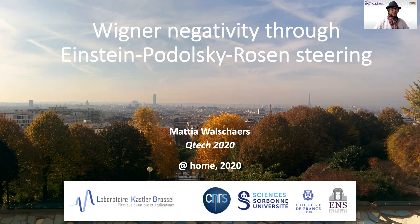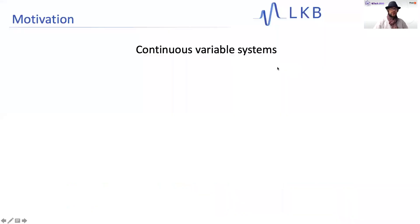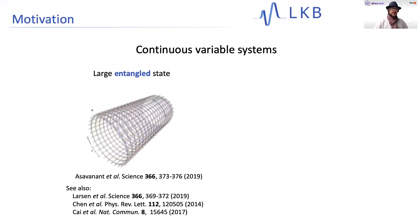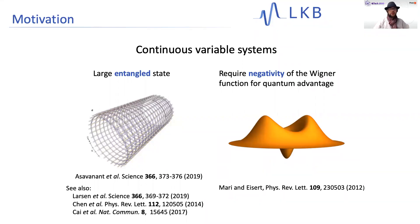This is going to be a continuous variable talk. One of the reasons why we like continuous variables is because they allow us to generate very large entangled systems. But they come with a downside as well, and this downside is that these large entangled states that we can generate are typically Gaussian states. Gaussian states are not very useful when we want to get a quantum computational advantage. To do so, we need to go beyond and actually generate states which have negative Wigner functions — states with these kinds of features like you see here. This is what I will concentrate on in my talk: the different ways of generating Wigner negativity.